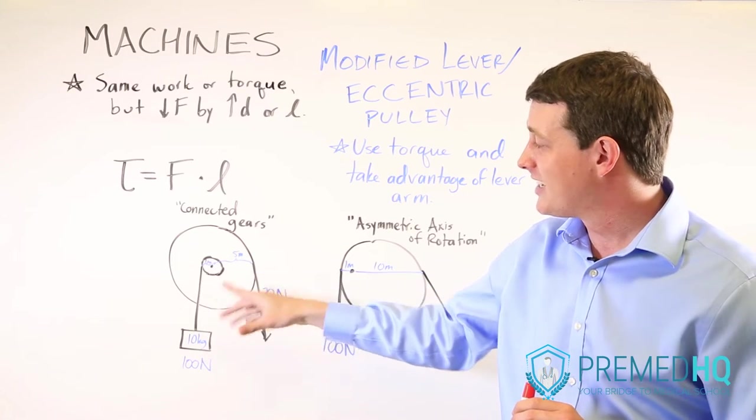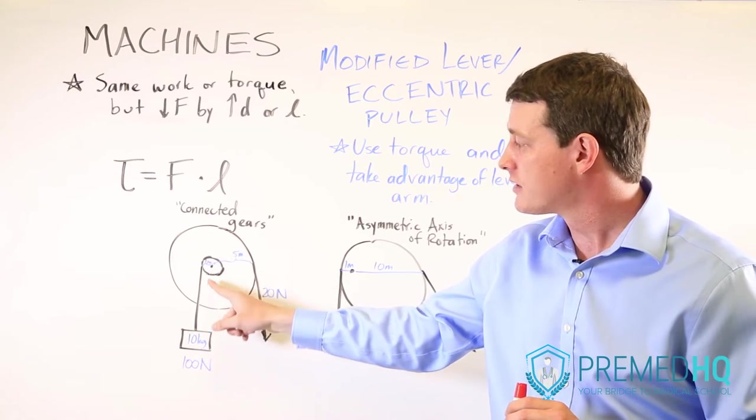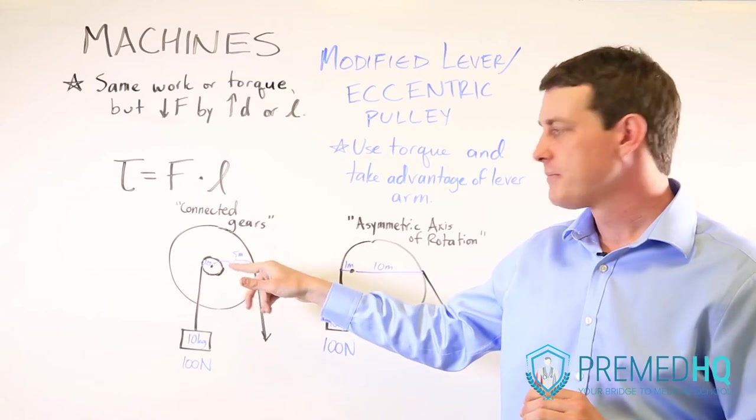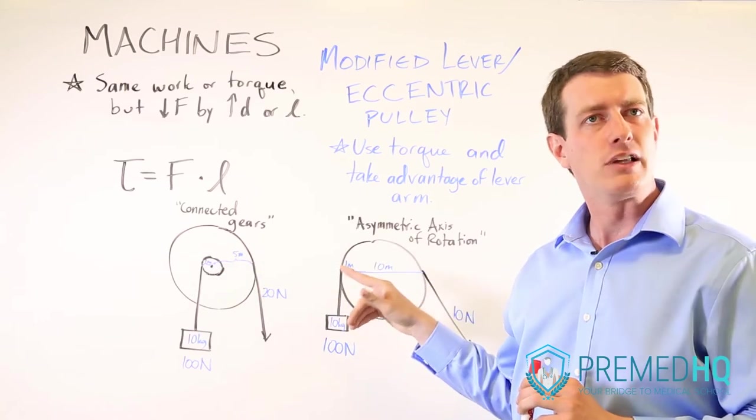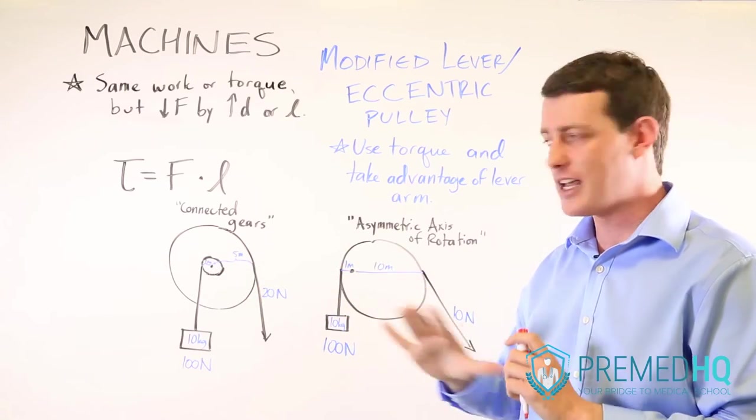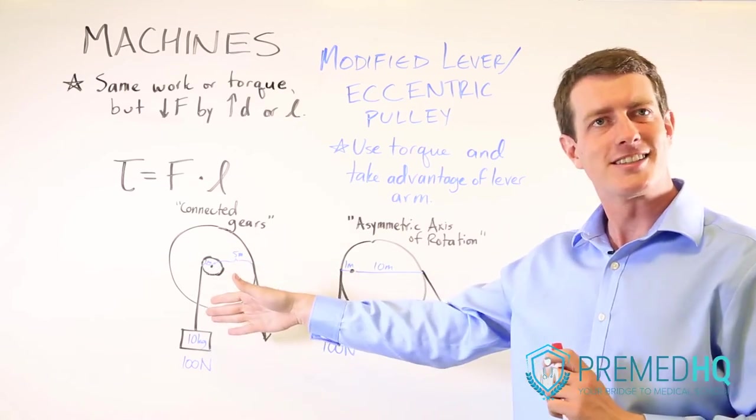So you're basically going to get an output of 100 newtons times that one meter versus an input of 20 newtons over a five meter lever arm. And so the torque is going to be the same for each of these strings in the system.